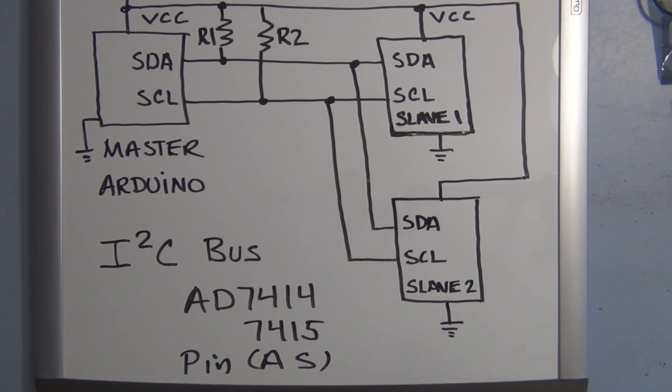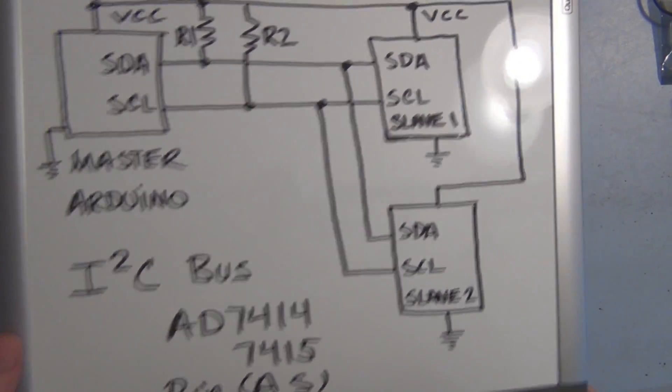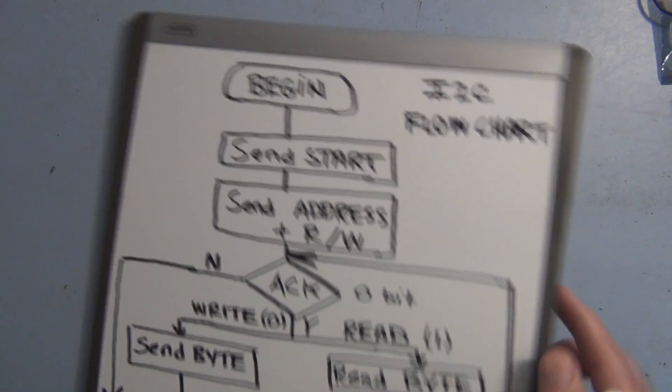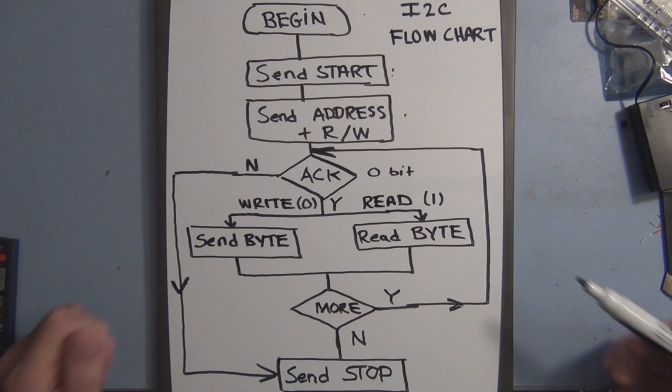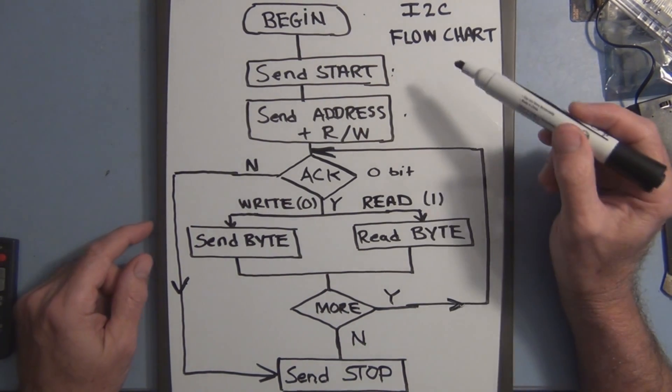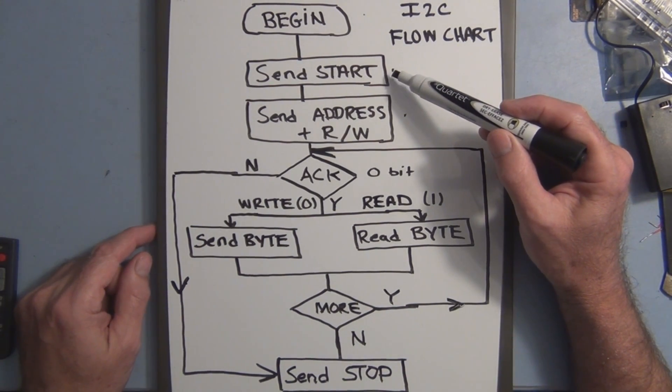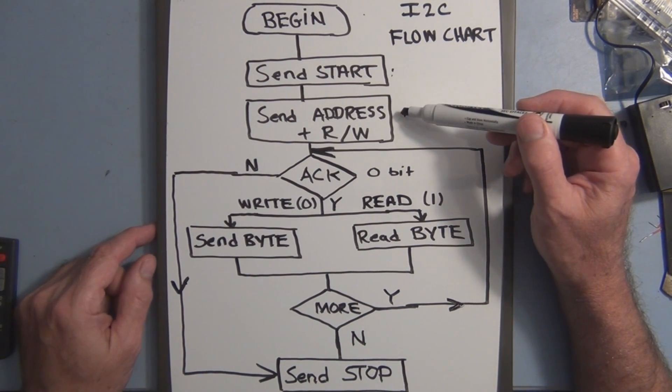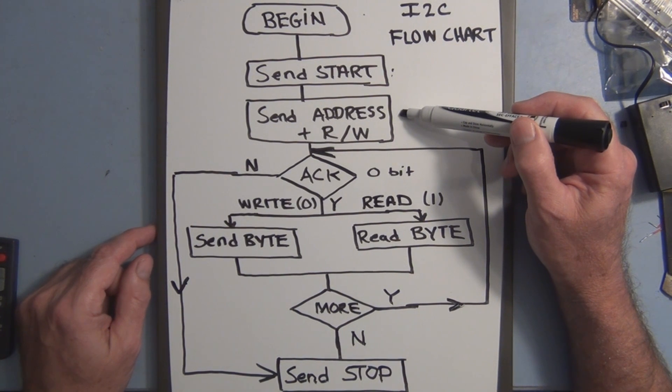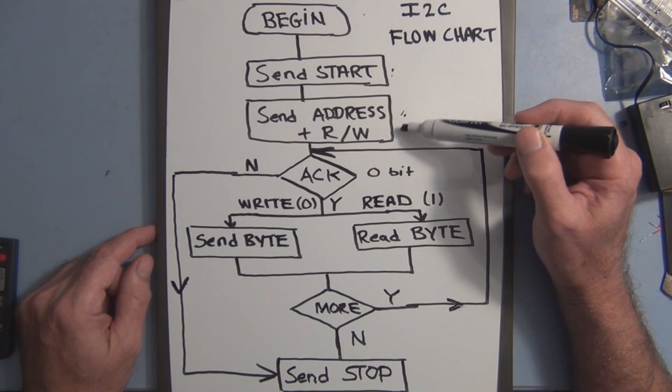So let's take a look at a flow chart of how we go about communicating using the I2C protocol. To give you a general idea of how you talk to an I2C capable device. So to initiate communications, you send a start bit and that says you want to start communicating with your slave. And then you send the address of that slave. So you specify which one you're talking to. And you send another bit that says you're going to read or write from that slave device.